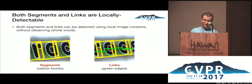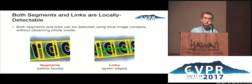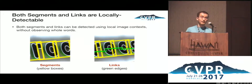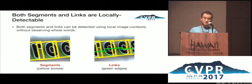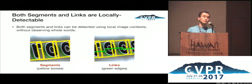The major benefit of this representation is that both elements are locally detectable. No matter how long the text is, we can always detect segments and links locally and join them together. And because of that, we can make the detection fully convolutional.